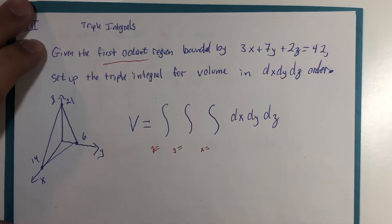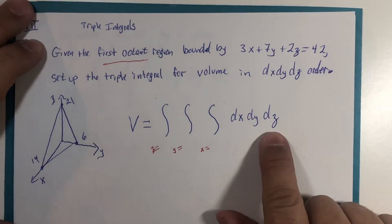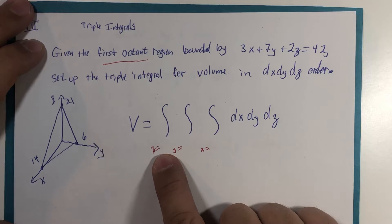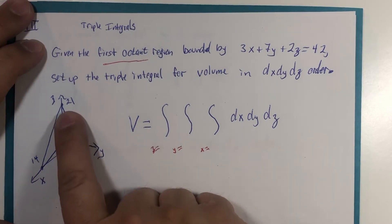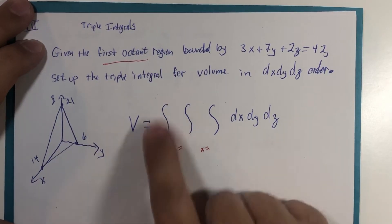Now, there's several things we could do immediately. One thing I could choose to do was just note if the z boundaries are constant, well, z goes from 0 to 21. And I could write in 0 and 21 right now.